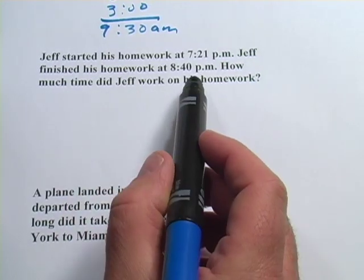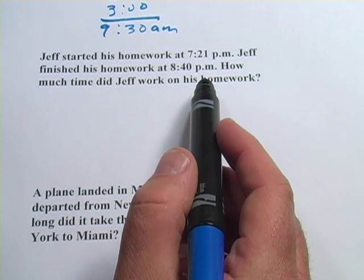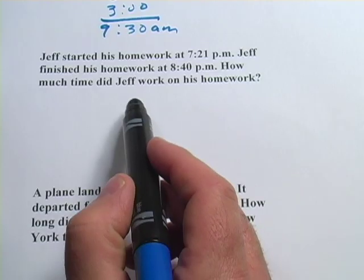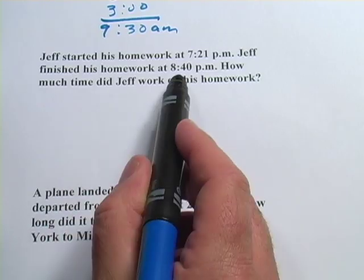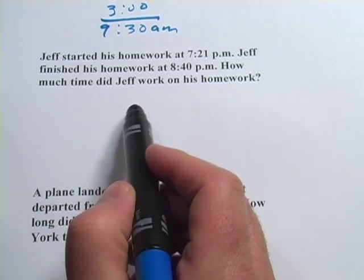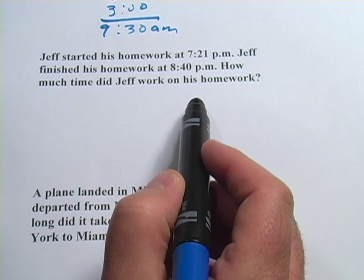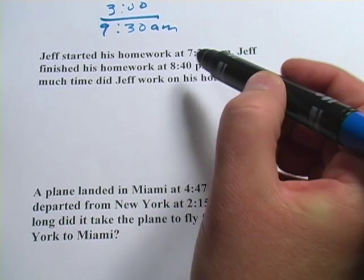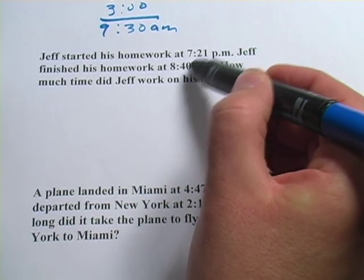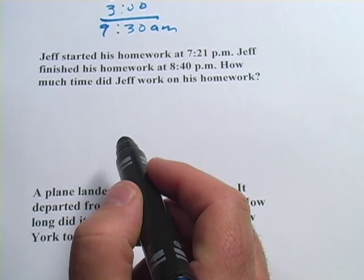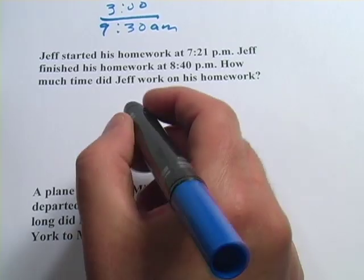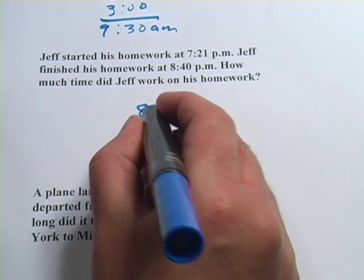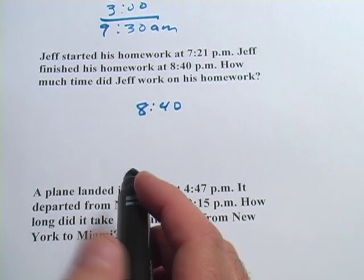Let's look at the next one. It says: Jeff started his homework at 7:21 p.m. Jeff finished his homework at 8:40 p.m. How much time did Jeff work on his homework? Now, when you want to find out the amount of time between two times, you've got to subtract.